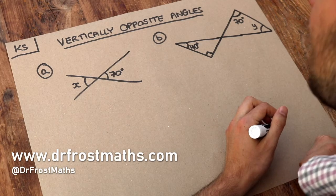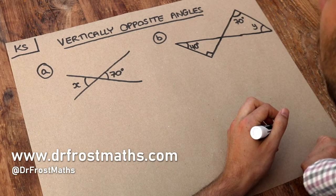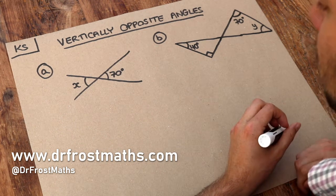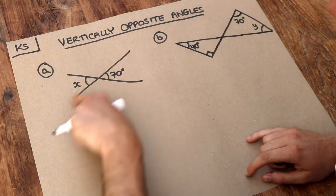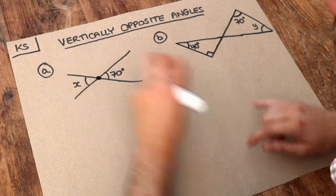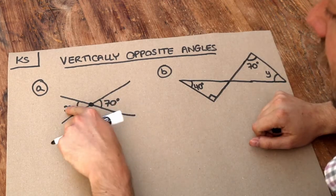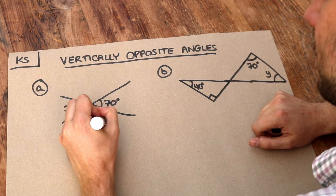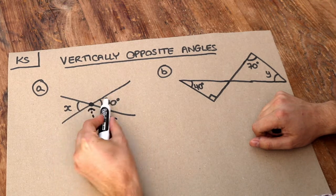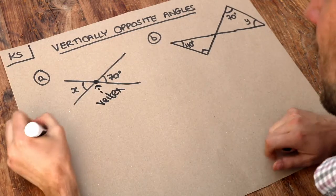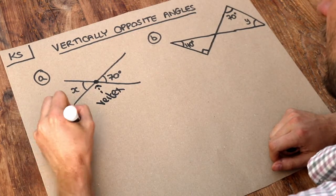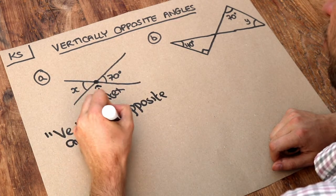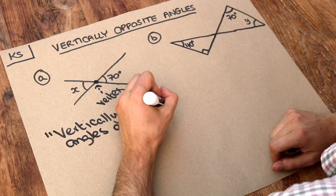Hello and welcome to this Dr. Ross Maths key skill video on vertically opposite angles. Vertically opposite angles are when we have two straight lines that meet at a point, and angles which are opposite each other with respect to this vertex. The vertex is just the point. These opposite angles are going to be equal, so we'd say that vertically opposite angles are equal — and that's what you would write if asked for justification of your angle.